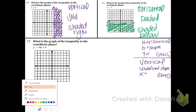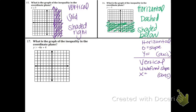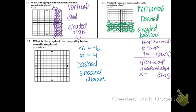Okay, number 17. Slope-intercept form tells me that this is going to be a diagonal line. You definitely want to organize your given. So immediately we know that the slope is negative 6 and the b is 4. We also know that it's going to be a dashed line because there is no line under the symbol. And it's also going to be shaded above. So now use the b — you always start with the b. Start with the b, which is 4. Start at the 4 and go down 6 over 1. Make a dashed line and shade above.